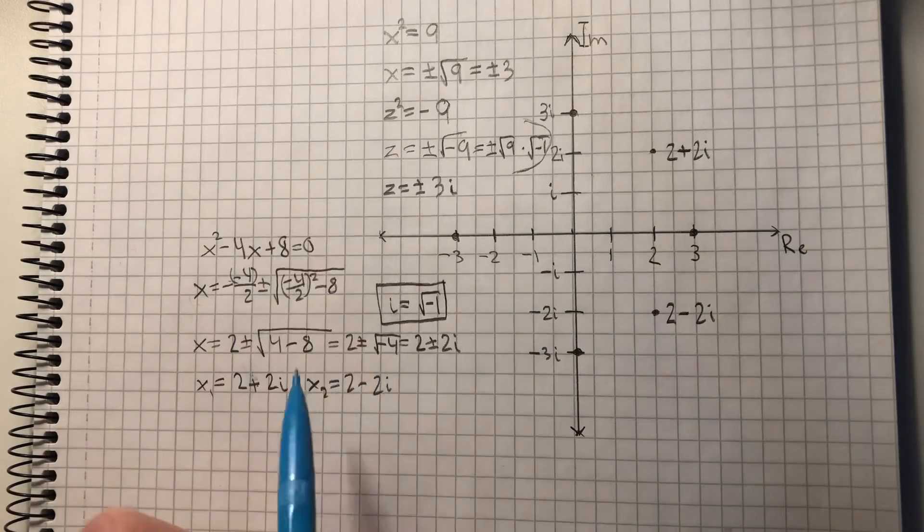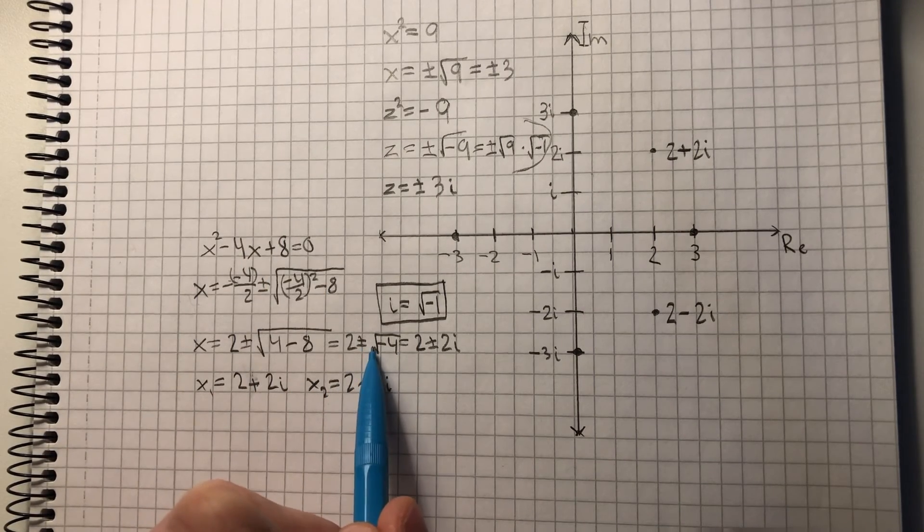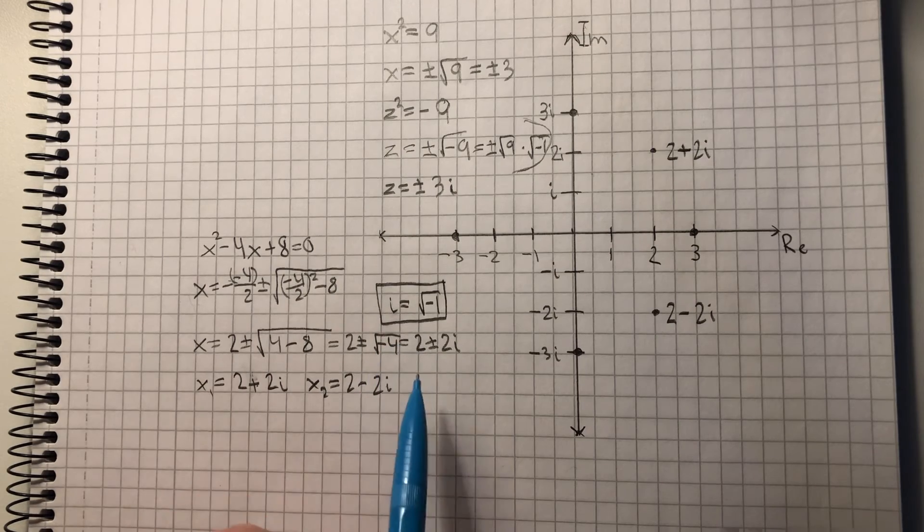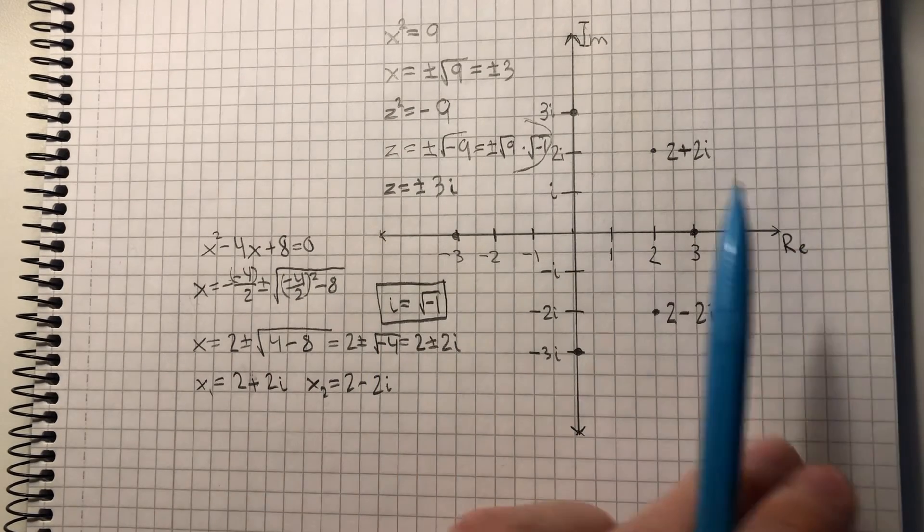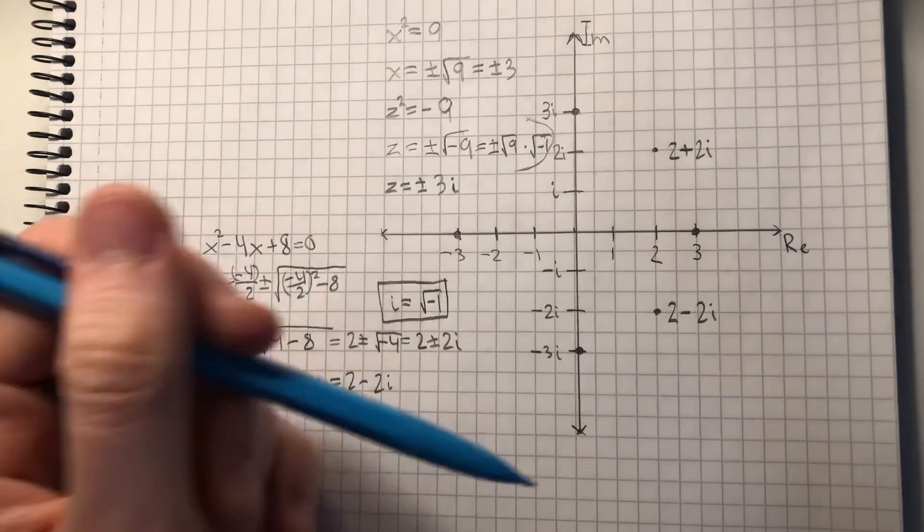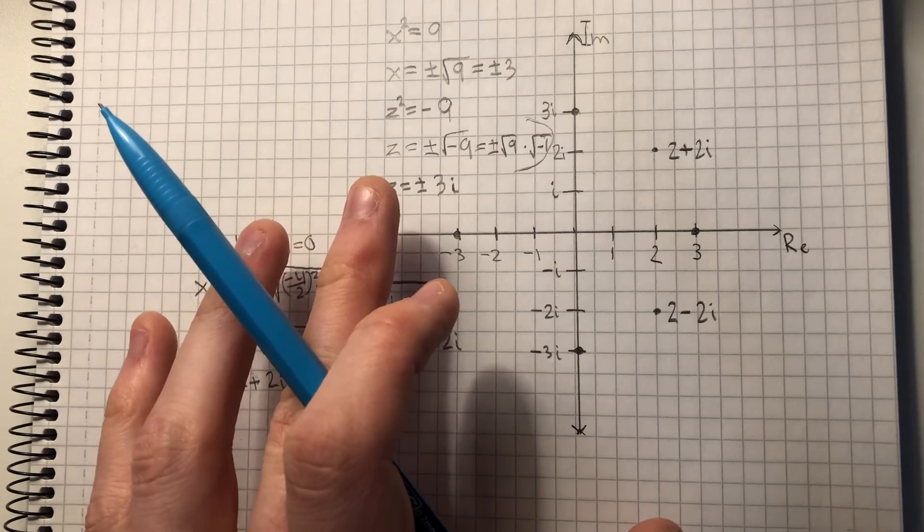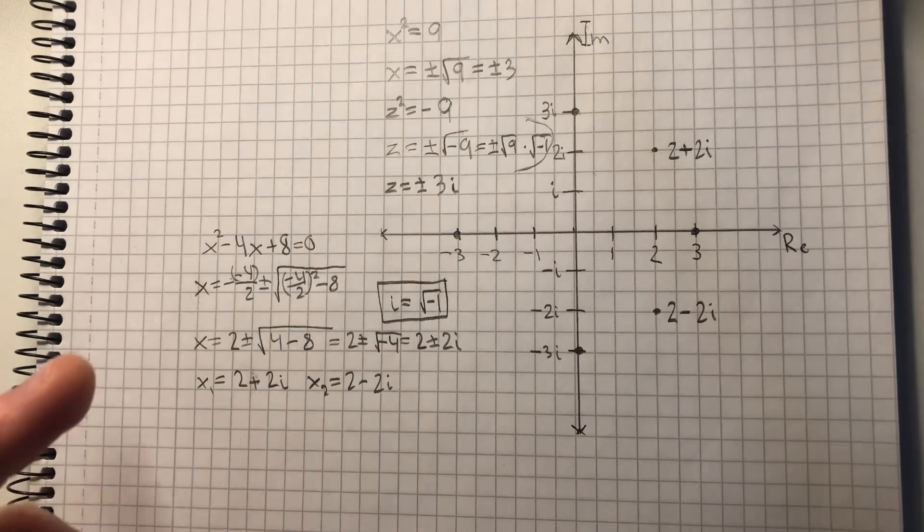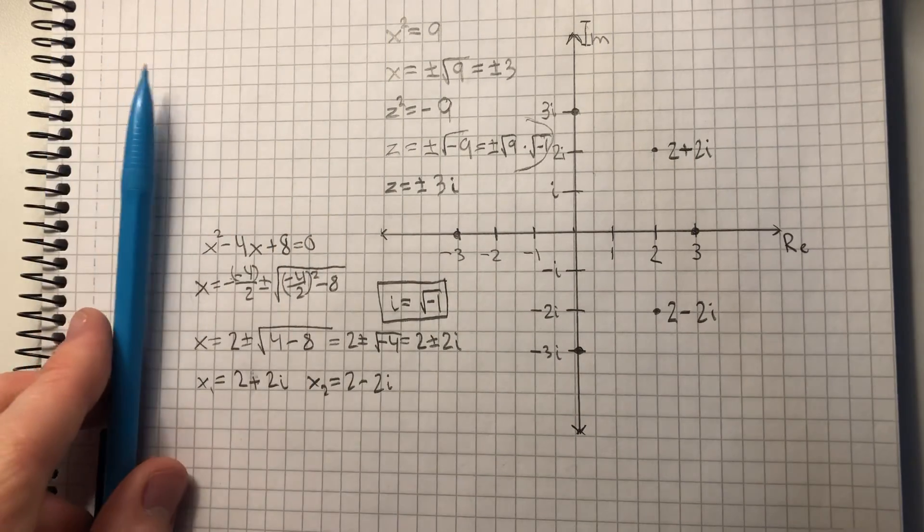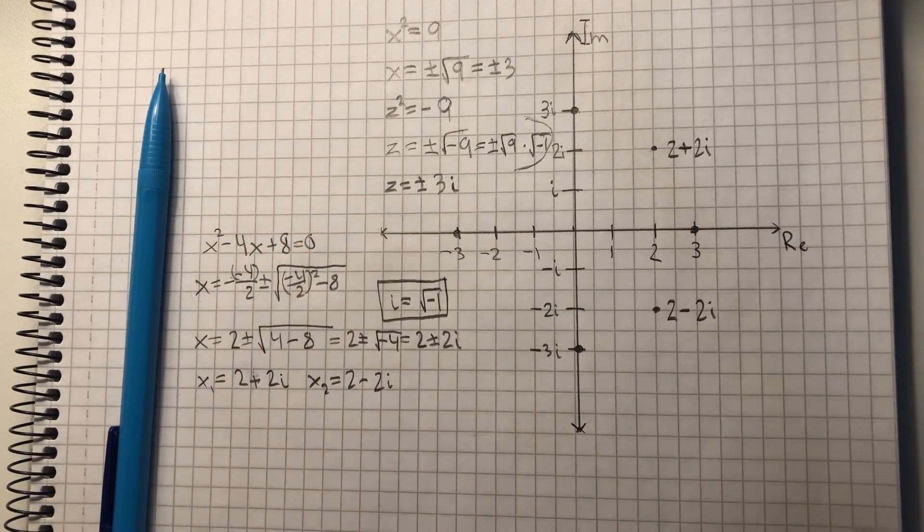So if you are ever doing a calculation and you end up with the square root of a negative number, you can say that there is no solution on the real number line, so you have to move to a more complex dimension. I hope that was helpful. Thank you for watching.